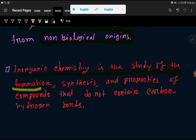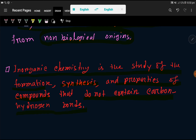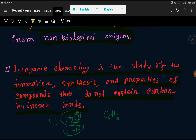Another definition of inorganic chemistry: it is the study of the formation, synthesis, and properties of compounds that do not contain a carbon-hydrogen bond. For example, water (H₂O) does not have a carbon-hydrogen bond, so it is a compound of inorganic chemistry. Benzene (C₆H₆), however, has a carbon-hydrogen bond.